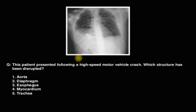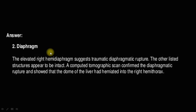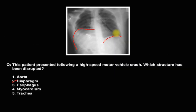This patient presented after a high-speed motor vehicle crash. What structure has been disrupted? Looking carefully at the X-ray, we can see the aorta, diaphragm at different levels, esophagus, myocardium, and trachea. The answer is the diaphragm, because the right diaphragm is elevated on the right side — consistent with traumatic rupture of the hemidiaphragm. CT scan confirms the diagnosis of diaphragmatic rupture; the dome of the liver has herniated into the right hemithorax.